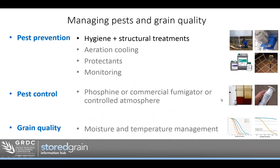As an overview to help us figure out where hygiene and structural treatments fit into the bigger picture of managing on-farm storage — it's really the first step. We're really about trying to prevent pests, prevent the infestation of pests, and prevent the damage of grain. If we don't get that right, we look at phosphine for on-farm pest control or commercial fumigation. Hygiene and structural treatments, along with aeration cooling, protectants and monitoring, are about pest prevention.